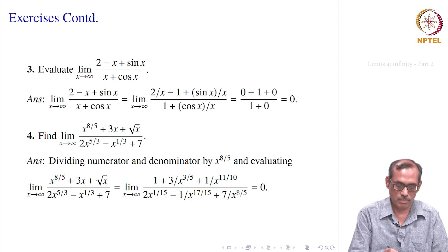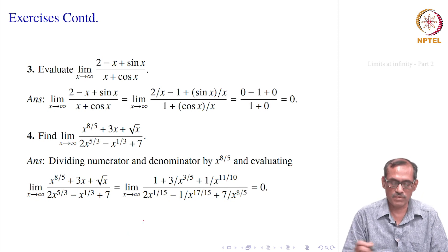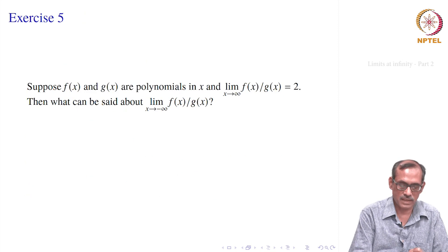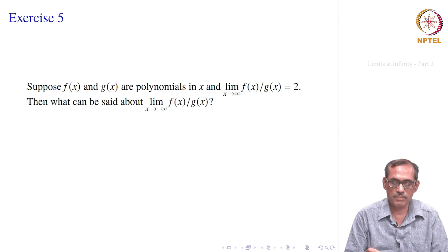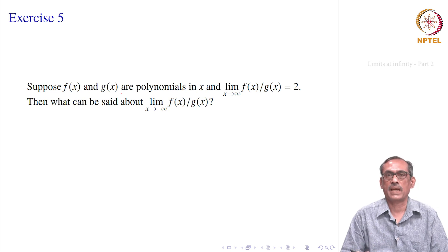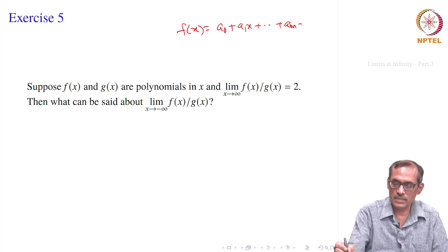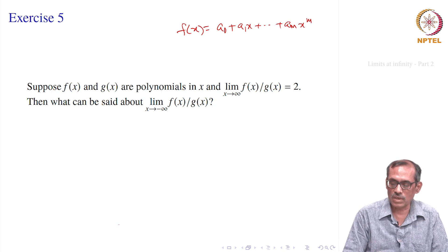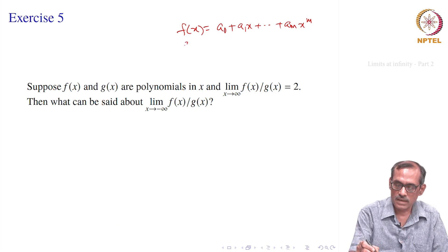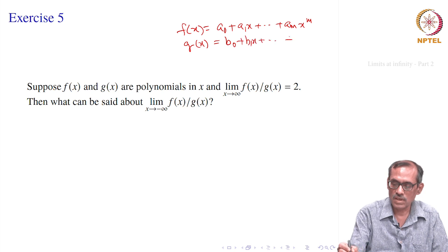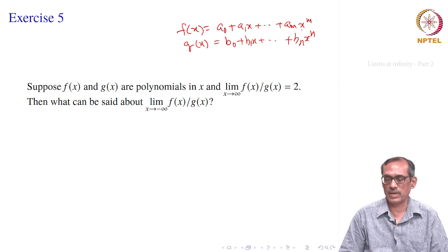Whenever we have powers of x divided by other powers of x, we follow this approach. Now consider a slightly different type: suppose f(x) and g(x) are polynomials in x, where f(x) = a₀ + a₁x + ... + aₘxᵐ and g(x) = b₀ + b₁x + ... + bₙxⁿ, and we are given that the limit as x goes to infinity of f(x)/g(x) equals 2.